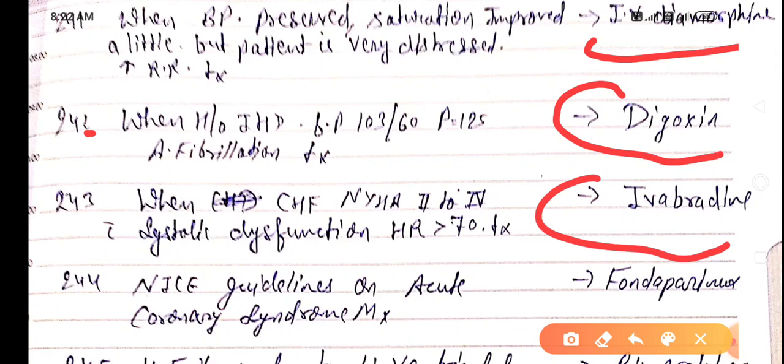NICE guidelines on acute coronary syndrome management is by fondaparinux. When planning for angiography within 24 hours, then low molecular weight heparin is the best.